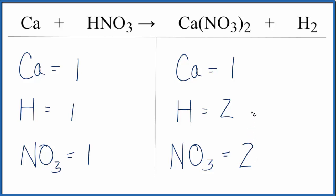Now, when I look at my coefficients, I can see I have 2 hydrogens on the product side, 1 here, 2 of these nitrate ions, and 1 here.